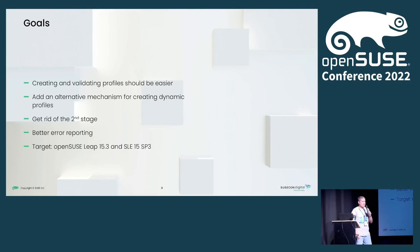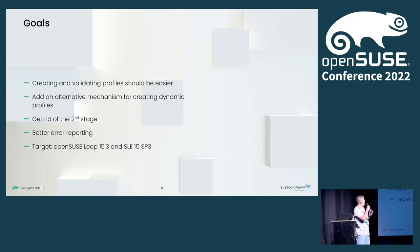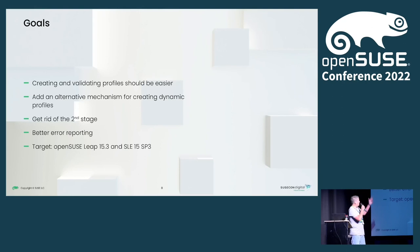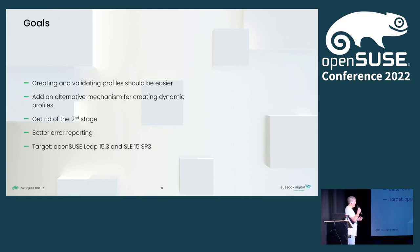In AutoJazz, we decided to introduce a few improvements, especially when it comes to creating and validating profiles, because it was not the best experience. We wanted to add another mechanism to have dynamic profiles, because the mechanics we have for profiles that can be adapted at runtime are rather old-fashioned. We also wanted to get rid of the second stage. If you tried Jazz a few years ago, the installation happened in two different phases — during the first stage the most important stuff was performed, and after the first reboot you got into the second stage where you could configure additional stuff.